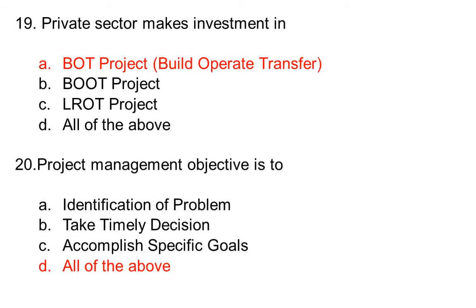Private sector makes investment in: option A BOT project (Build, Operate, Transfer), option B BOO project, option C TROT project, option D all of the above. The correct answer is option A, BOT project.